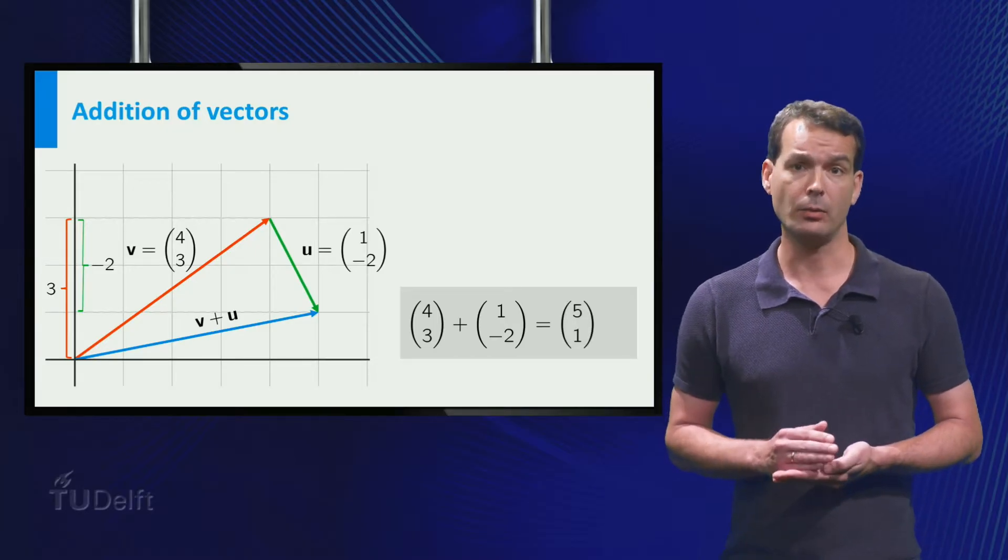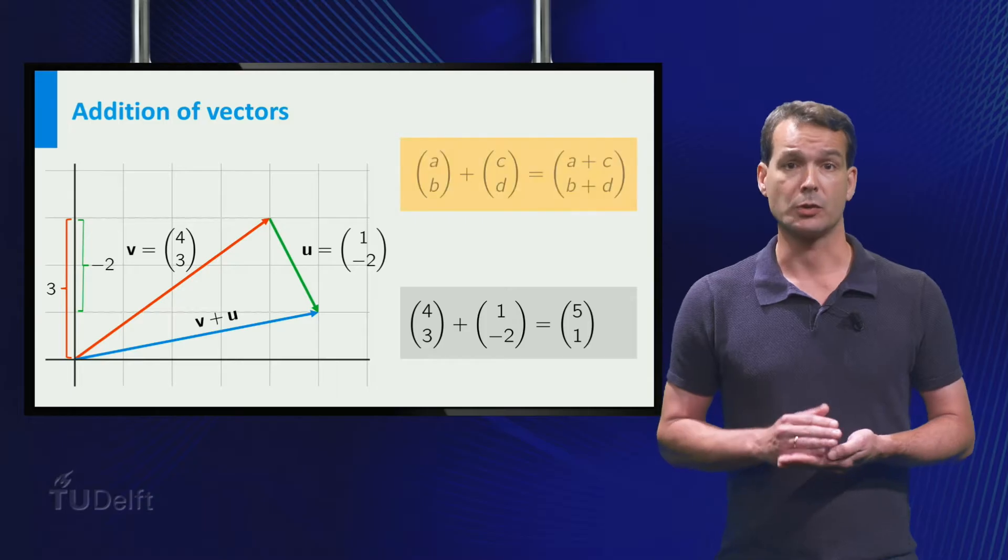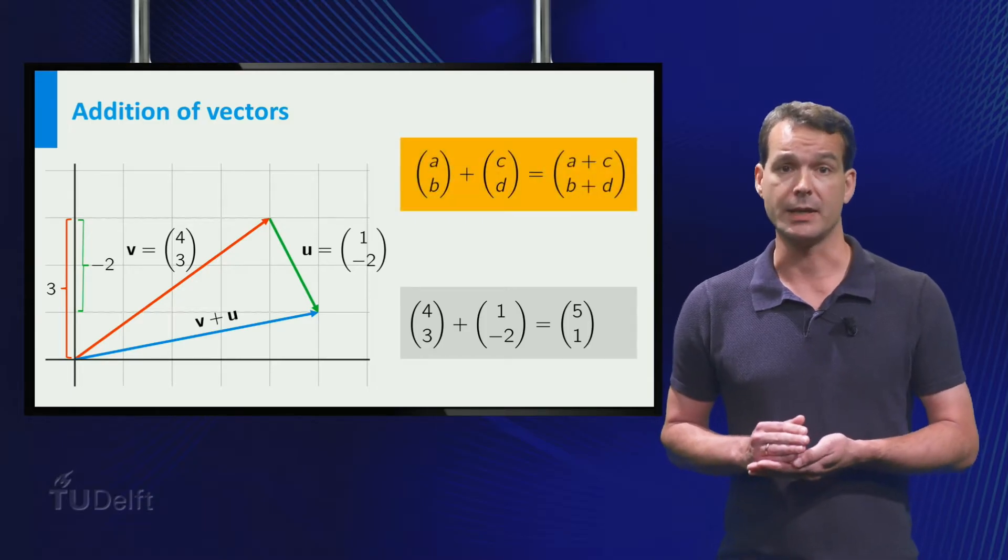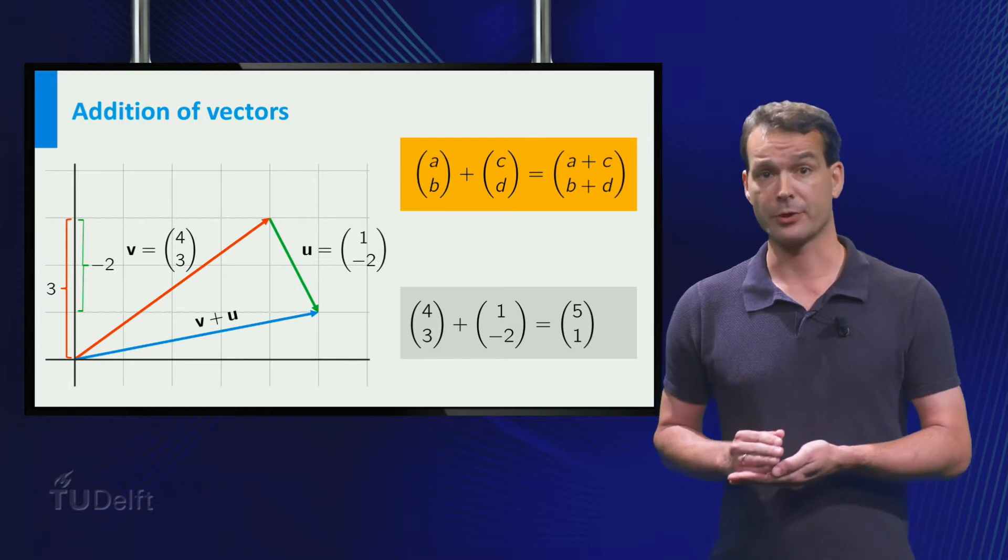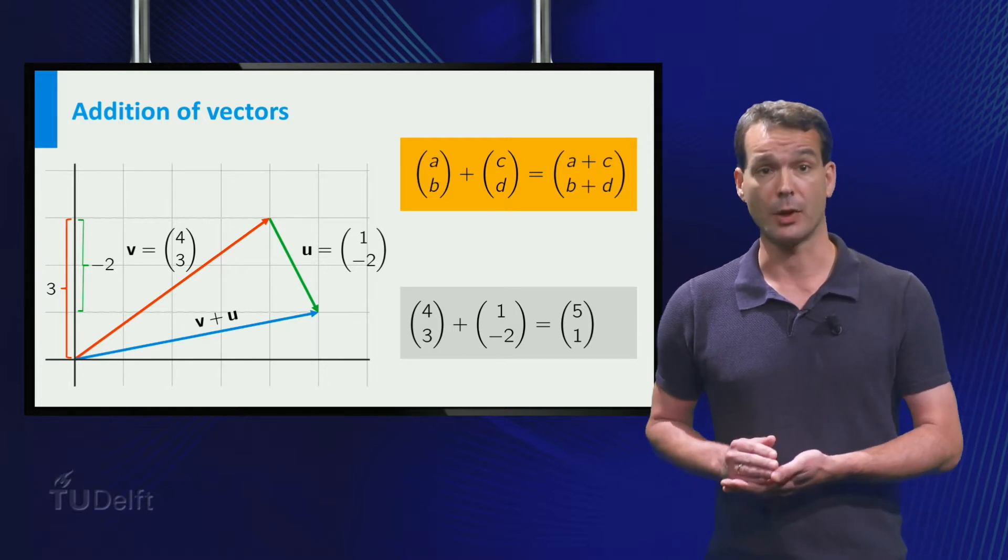In general we add two vectors component-wise. So the sum of the vectors a, b and c, d is the vector with a plus c as a first component and b plus d as a second component.